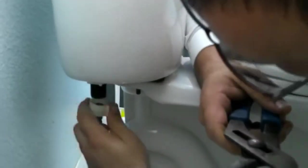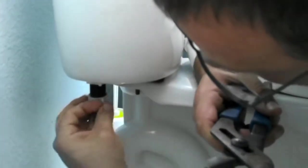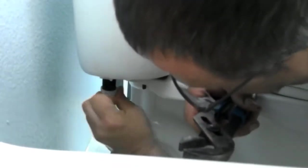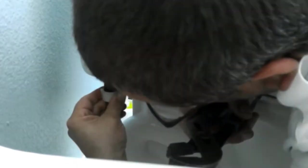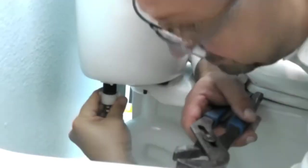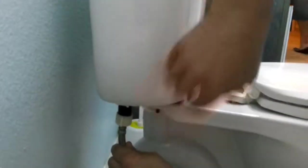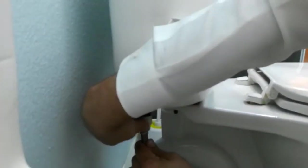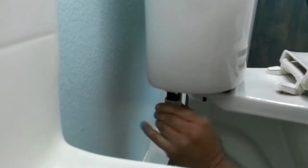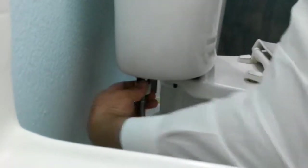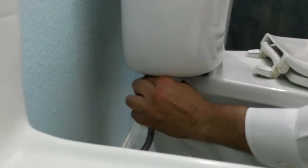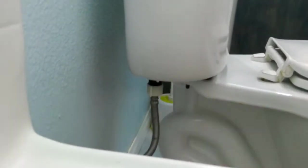Just like that, and the same goes with your cold water supply line to your toilet. Again, you want to make sure it's tight. Take your channel locks, grip it, and tighten it.